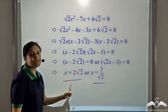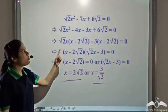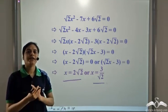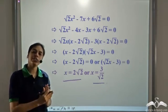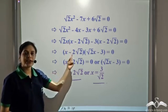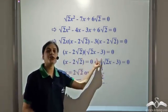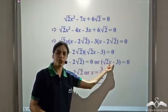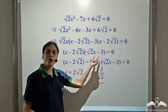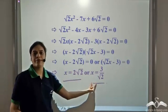So x equals 2 root 2 or x equals 3 by root 2 is the solution of this equation. To summarize: we can solve a quadratic equation by taking all the terms on the left hand side, factorizing the left hand side to get it in the form of something times something equals zero, then equating each factor to zero and solving for the variable. This is how we solve a quadratic equation by factoring.